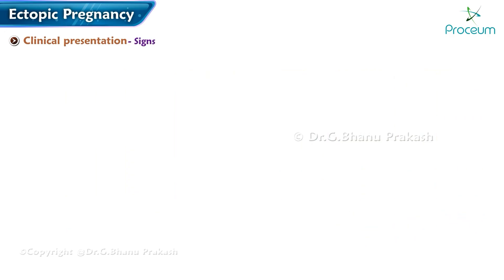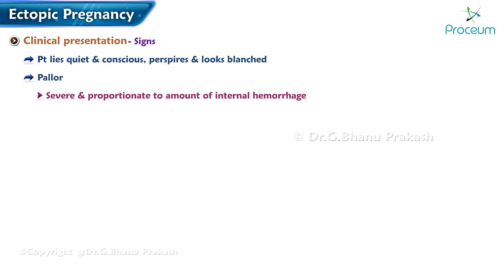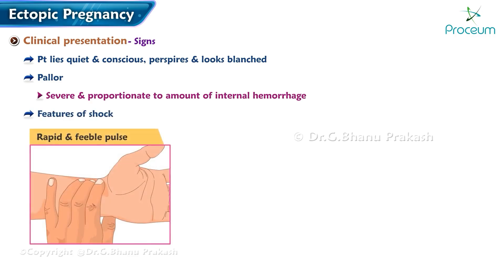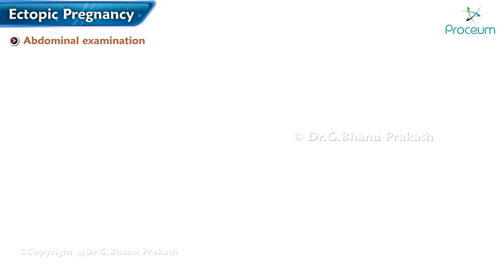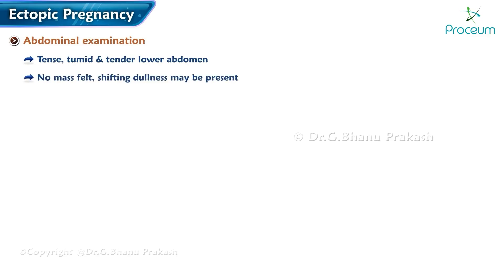Signs: the patient lies quiet and conscious, perspires, and looks blanched. Pallor is severe and proportionate to the amount of internal hemorrhage. Features of shock include a rapid and feeble pulse, hypotension, and cold clammy extremities. Abdominal examination: the lower abdomen may appear tense, tumid, and tender; no mass is usually felt; shifting dullness may be present; bowels may be distended.